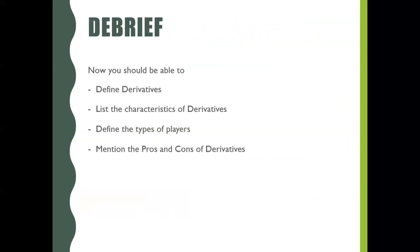Here, we have come to the end of this module. Now, you should be able to define derivatives, list the characteristics of derivatives, define the types of players, mention the pros and cons of derivatives, illustrate derivatives with an example, and name the types of derivative products.